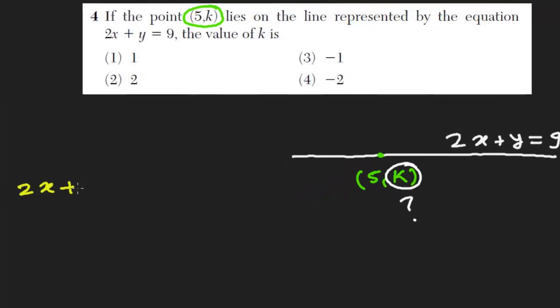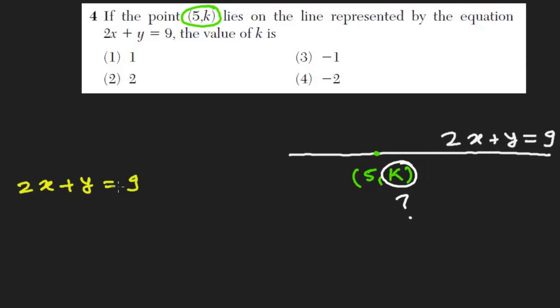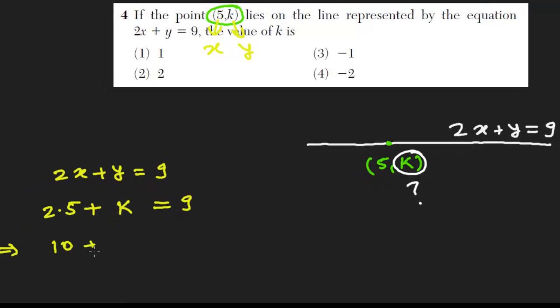Our equation is 2x + y = 9. Now let's plug the value of x and y. This 5 will work as x and this k will work as y, so it will be 2 times 5 plus k equals 9. So it's going to be 10 plus k equals 9.